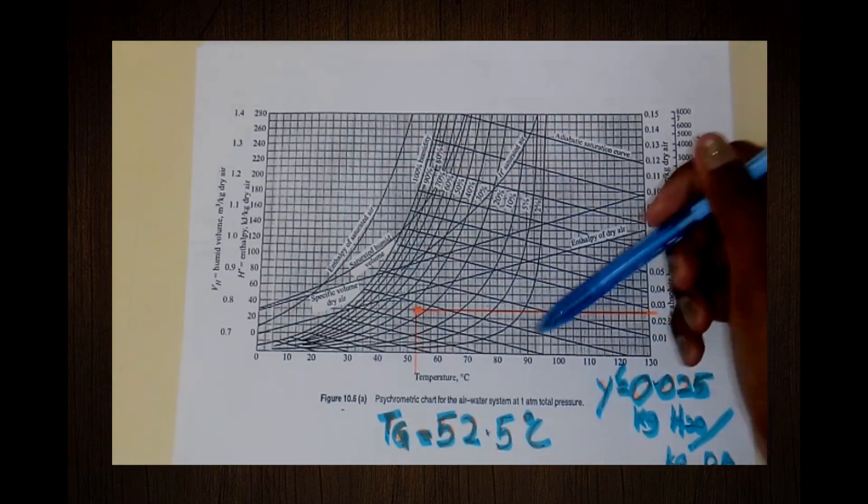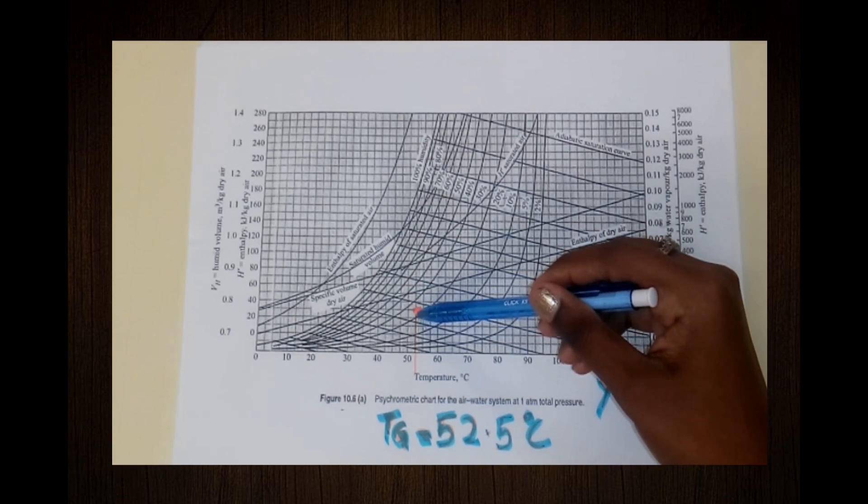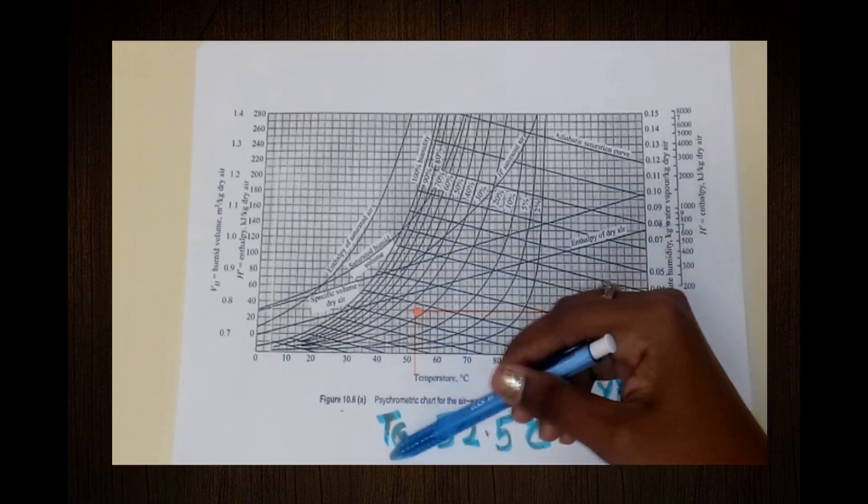For now, we randomly select a point and extract all the quantities available. First, let's find the dry bulb temperature. Draw a vertical line down to the temperature axis and we find that the dry bulb temperature is 52.5 degrees Celsius.